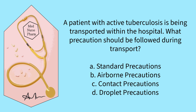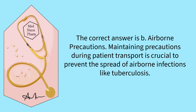A patient with active TB is being transported within the hospital. What precautions should be followed during transport? Standard, airborne, contact, or droplet? The correct answer is B, airborne precautions. Maintaining precautions during patient transport is crucial to prevent the spread of airborne infections like TB.